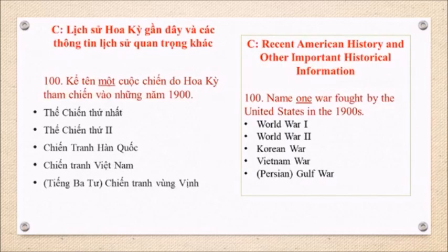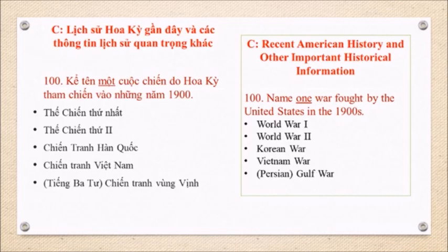C. Recent American History and other important historical information. Question 100: Name one war fought by the United States in the 1900s. World War I. World War II. Korean War. Vietnam War. Persian Gulf War.